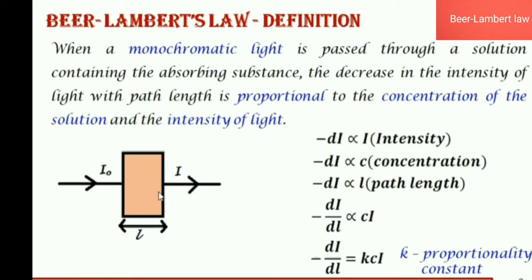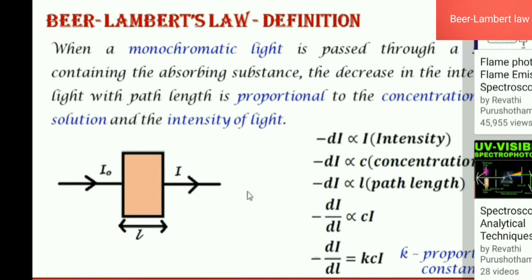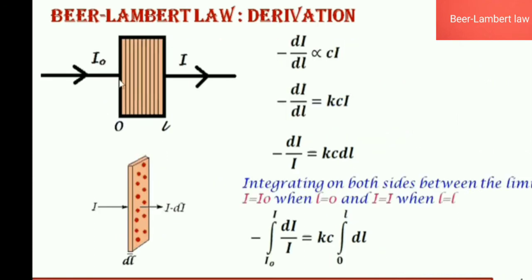Now we will understand this definition better. Imagine that this path length is divided into 10 divisions — this is only for understanding; it is actually divided into infinitesimally small divisions. We are considering dl, one small division. If I take one division and I is the intensity entering through this division, when it comes out, some amount of light di is absorbed. Because the length here is not L but only dl, a small division, the intensity of light coming out will be I minus dI.